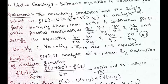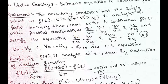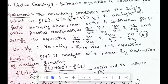The statement is the necessary condition that a single-valued function w = u(x, y) + iv(x, y) is analytic at point z = x + iy. Then there exist 4 continuous first-order partial derivatives: ∂u/∂x, ∂u/∂y, ∂v/∂x, and ∂v/∂y. These partial derivatives must satisfy the CR equation in Cartesian form.